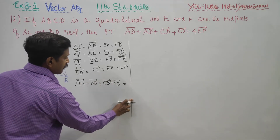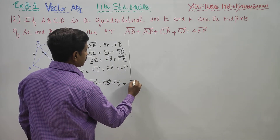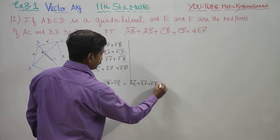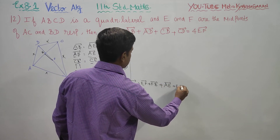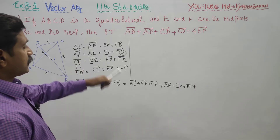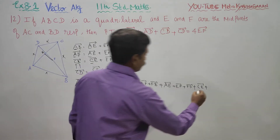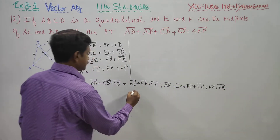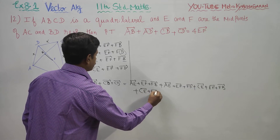What is my answer? AB gives AE plus EF plus FB. AD gives AE plus EF plus FD. CB gives CE plus EF plus FB. CD gives CE plus EF plus FD.